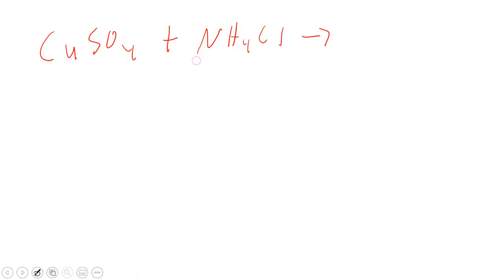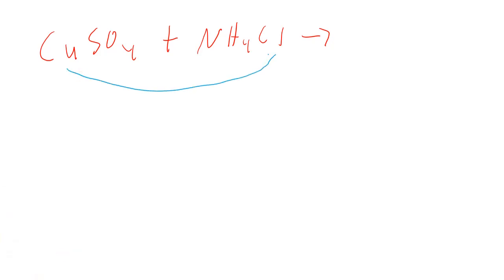One of your reactions that you're going to do is you're going to react copper sulfate plus ammonium chloride. So what's going to happen is we're going to swap partners. Copper is going to go with the chloride and the ammonium is going to go with the sulfate.